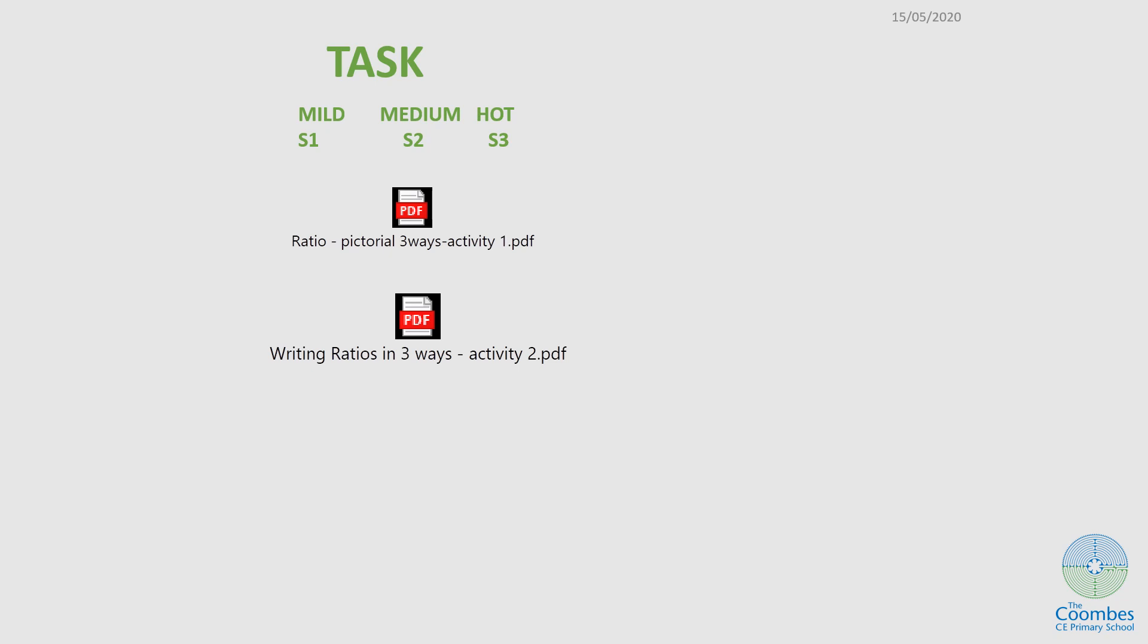How did you do? Now, if you feel confident, then you do the work. There are two different tasks to do. Start with this one. S1 will be for the mild as usual, S2 the medium, and S3 the hot. If you feel confident after that, you can challenge yourself and do the second one.